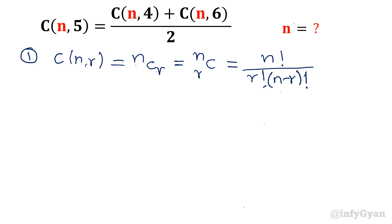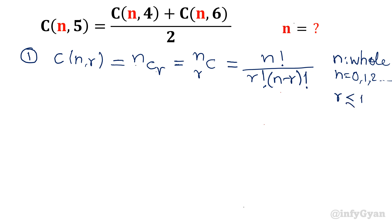This is what we all know. The limitations on N: basically N is a whole number, meaning N may be 0, 1, 2, and so on — it cannot be a negative integer. Now the second limitation is on R: R should be less than or equal to N, R should not exceed N.